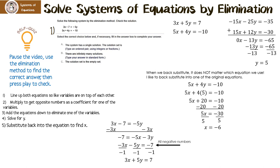Let's look at our possible answers. A: the system has a single solution. B: there are infinitely many solutions. Or C: the solution set is the empty set. In this case, we definitely have an ordered pair, and our solution set is negative 6, 5 — x is negative 6 and y is 5.